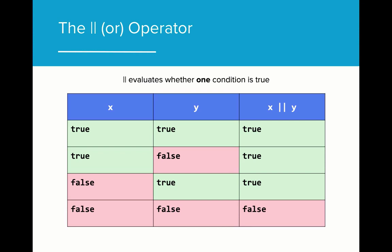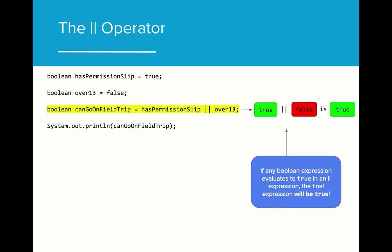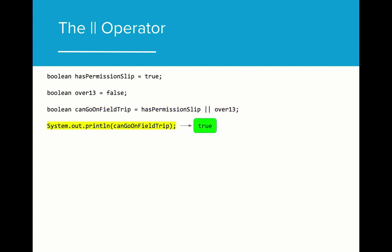The OR operator allows us to evaluate whether any of the conditions in a Boolean expression are true. If any condition using OR is true, then the final expression will evaluate to true. This is another table worth taking a deeper look at. In this program, we are evaluating whether or not someone can go on a field trip. The student can go on the trip if they have a permission slip or they are over 13 years old. We can set this up by using an OR statement. CanGoOnFieldTrip will evaluate to true if the student has a permission slip OR is over 13. Because the student has a permission slip, the resulting Boolean expression evaluates to true as one of the two conditions is true. CanGoOnFieldTrip will evaluate to true when printed, so this student can go on the trip.